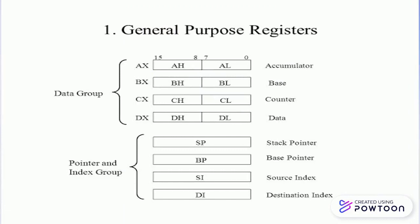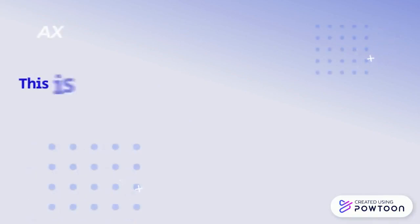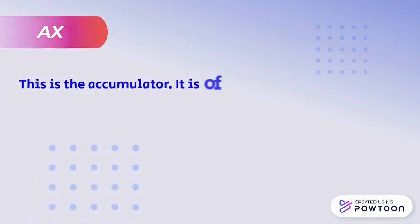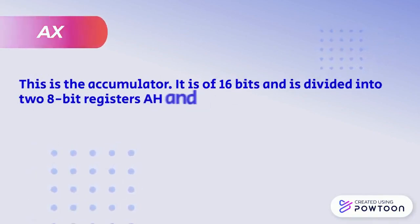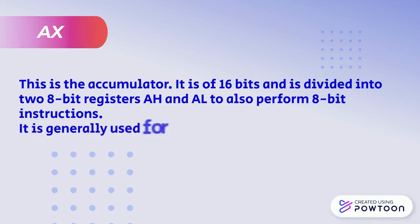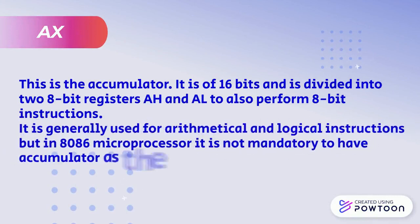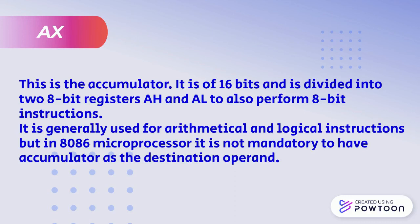Now let us begin with the first register AX. AX is an accumulator register. It is of 16 bits and it is divided into two 8-bit registers AH and AL to perform 8-bit instructions. It is generally used for mathematical and logical instructions.